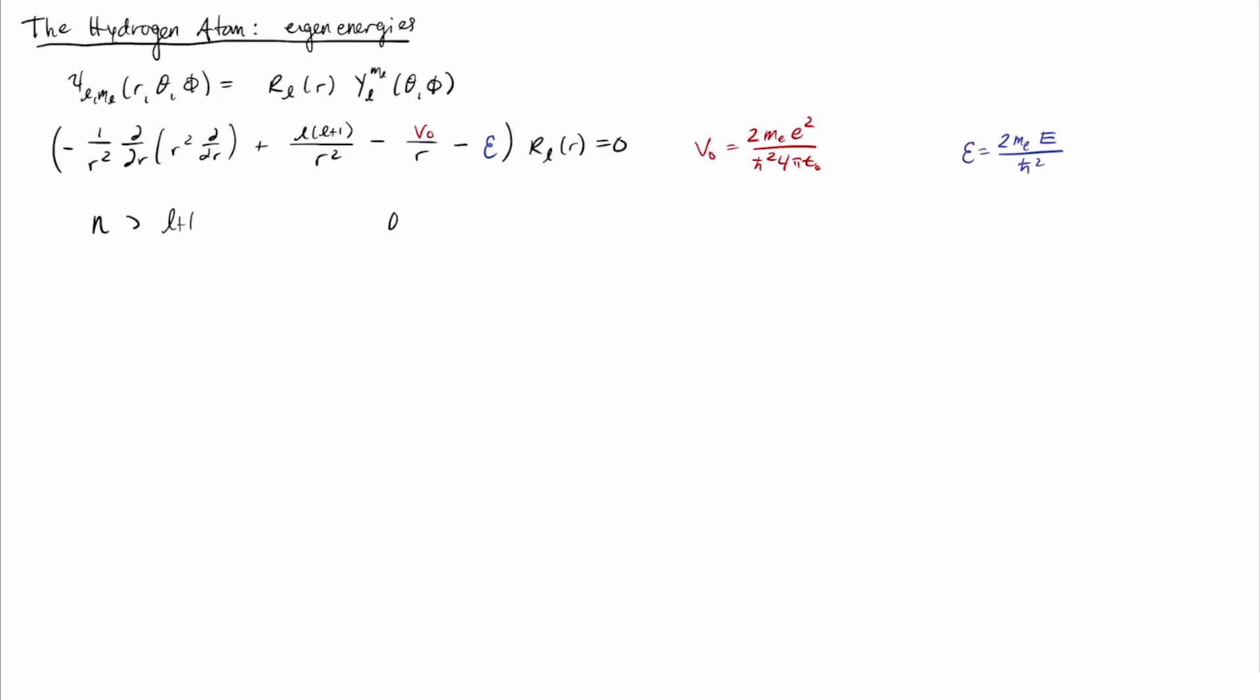Or put another way, we find that we know that L must be bigger than or equal to 0, and then L will be less than or equal to n minus 1. And then the energies that you get out of this can be indexed by just this value of n.